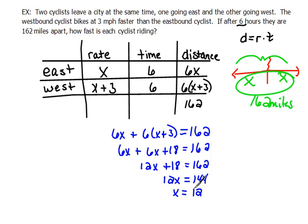So what does this say? This says that the first person is going 12 miles per hour. The second one, the westbound cyclist, is going 3 miles per hour more than the first, so he's going 15 miles per hour.